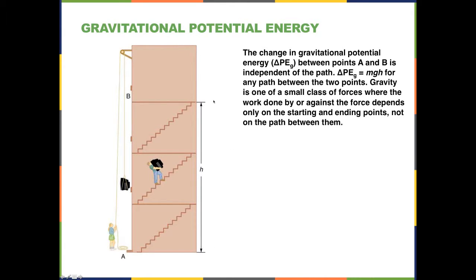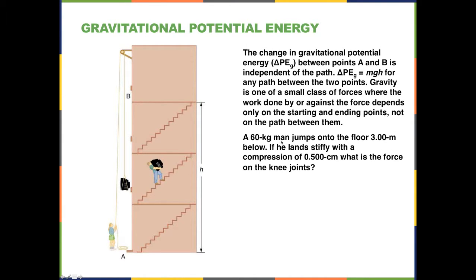So if a 60-kilogram man jumps onto a floor three meters below him — he's standing on a ledge and jumps off, falling almost ten feet — and lands stiff-legged, what happens is there's a compression of his knees. That compression represents a change of 0.5 centimeters. What is the force exerted on his knee joints?